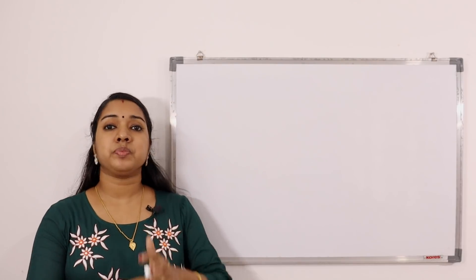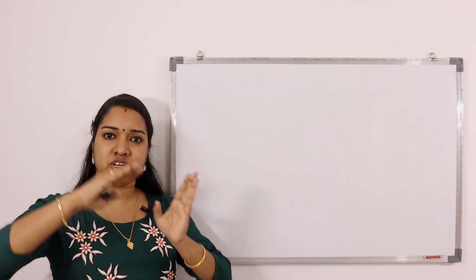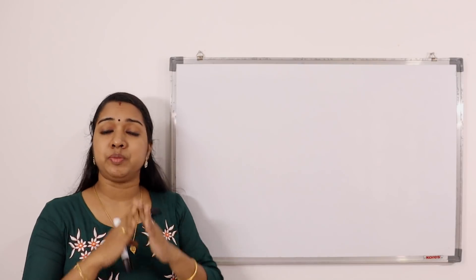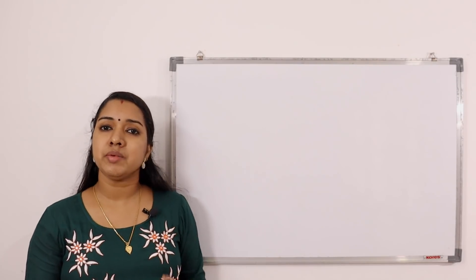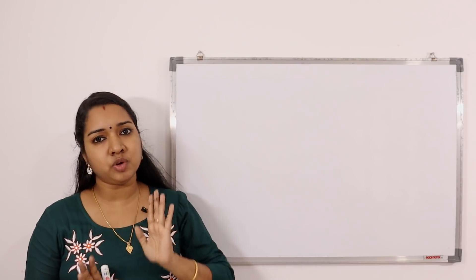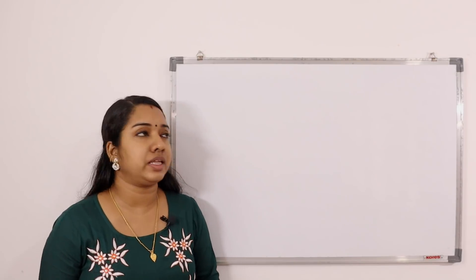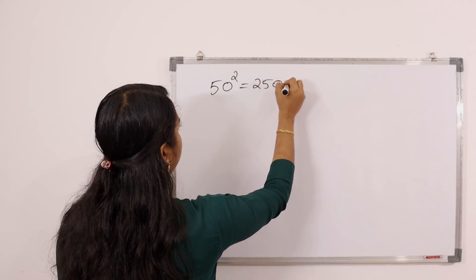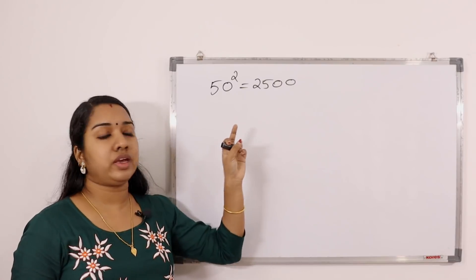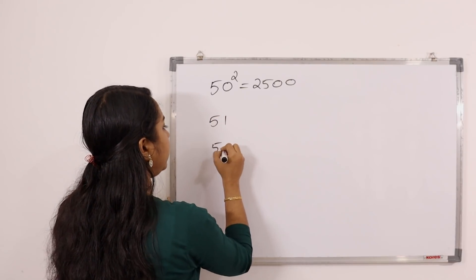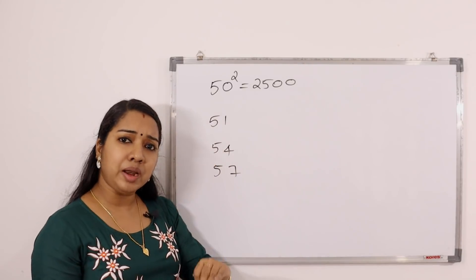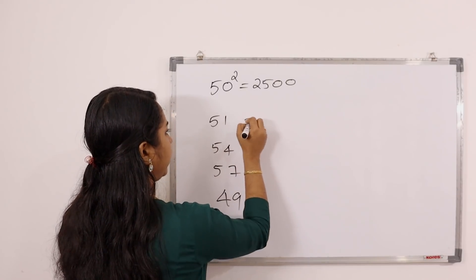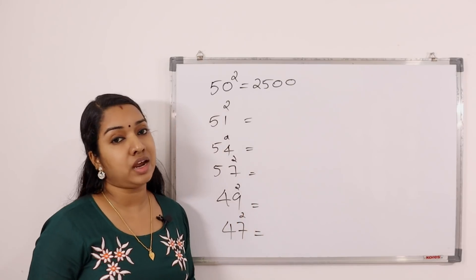The next tip is the easy method. The numbers are the smallest number around 80. If you have a method, you can learn it. If we take a square with 50, we use a square with 50, 50, and 20. The difference is that we use the number of 50, 50, and 50.